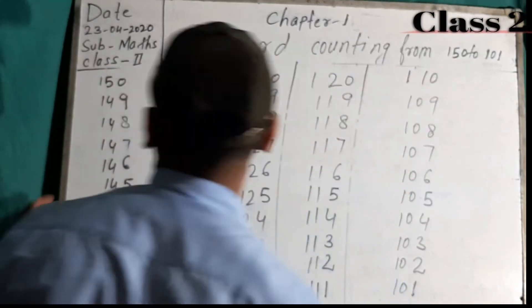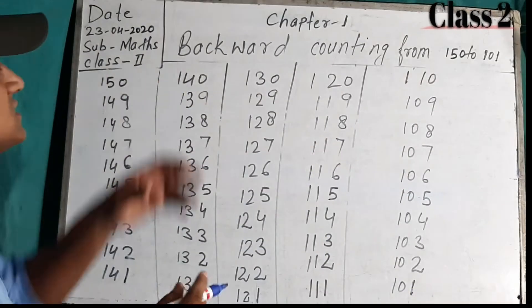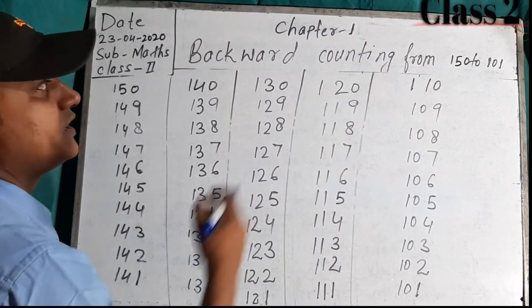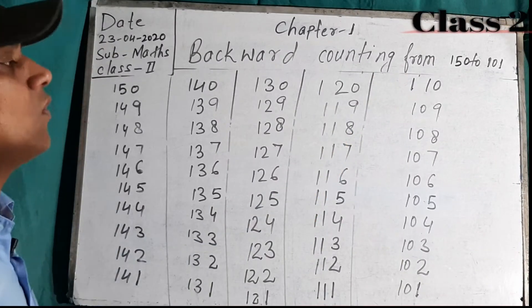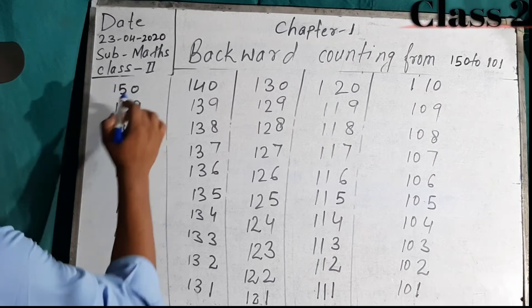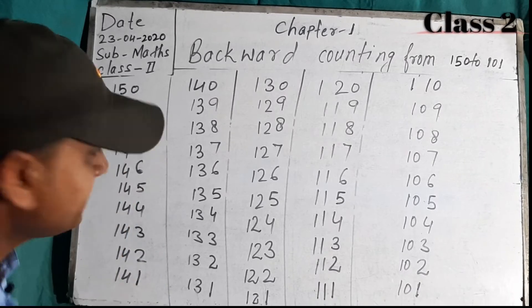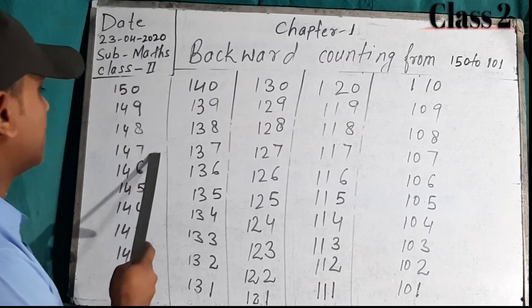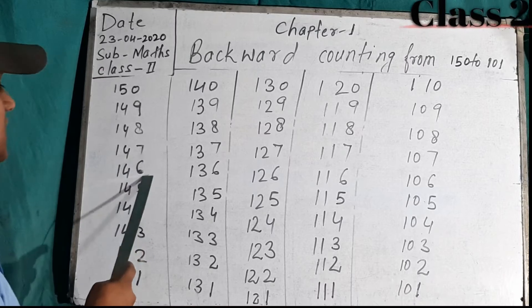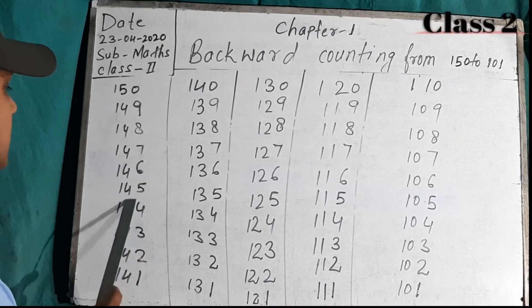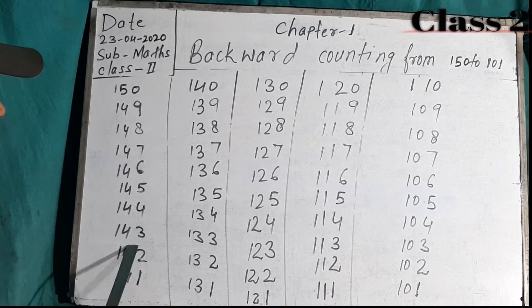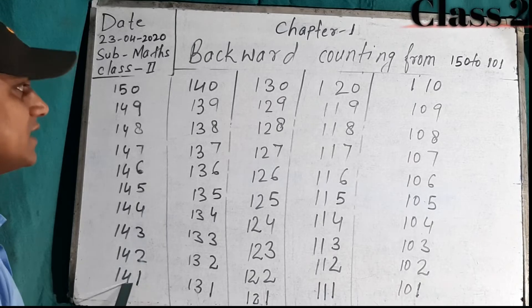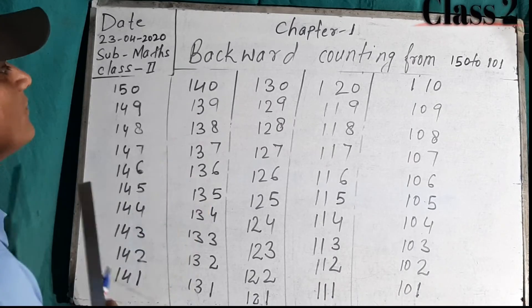Dear students, how to read backward counting from 150 to 101: 150, 149, 148, 147, 146, 145, 144, 143, 142, 141, and 140.